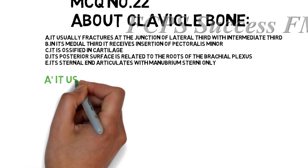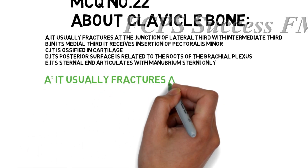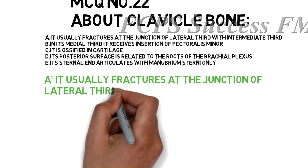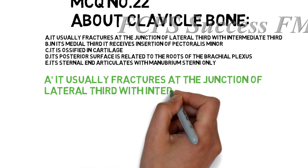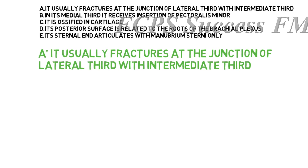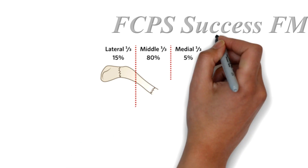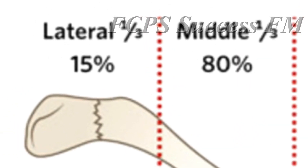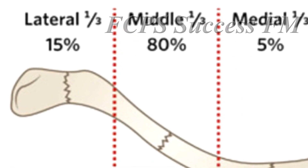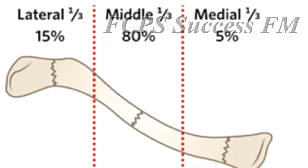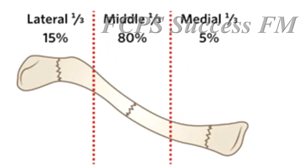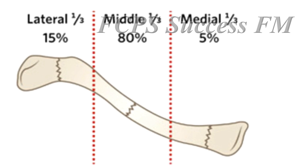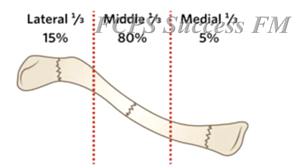The correct answer is option A — the clavicle usually fractures at the junction of the lateral third with the intermediate third. The rest of the options are wrong because it ossifies in membrane, not cartilage. The posterior surface is related to the divisions of the brachial plexus, not the roots. The external end articulates with the first rib as well as the manubrium sterni.